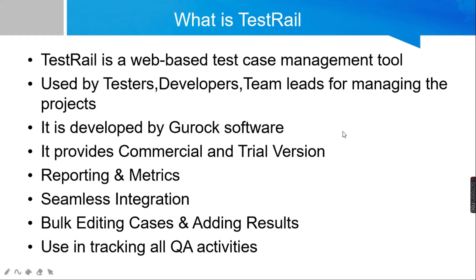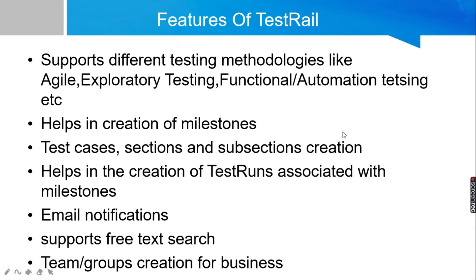Let us look at some features of TestRail. TestRail supports different methodologies — we have agile, exploratory testing, functional testing, and automation testing. It helps in the creation of milestones, which are targets that need to be achieved. We can set several milestones in TestRail, create start dates and end dates for the milestones, and then track those milestones.